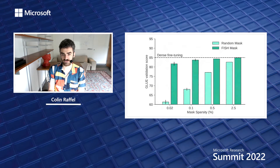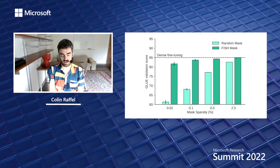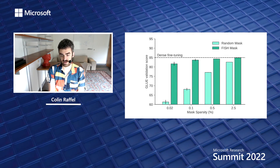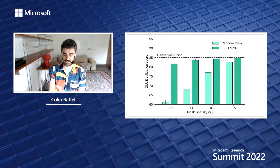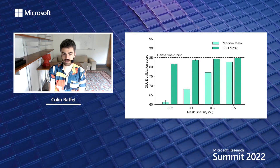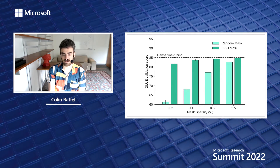How well does the FISH Mask work? If we take a pre-trained model — in this case BERT — and fine-tune it on various tasks from the GLUE benchmark, updating only the parameters chosen by the FISH Mask, we can ask how well that performs compared to updating all parameters for various levels of mask sparsity. Even when updating a very small percentage of model parameters — say half a percent or even a tenth of a percent — we get very close to recovering the full fine-tuning performance. Choosing a random subset of parameters of the same size performs significantly worse.